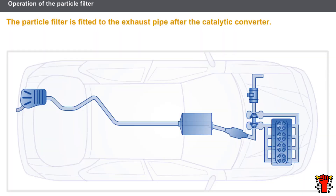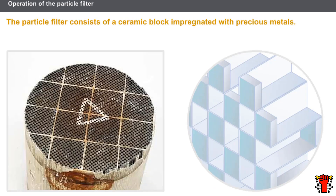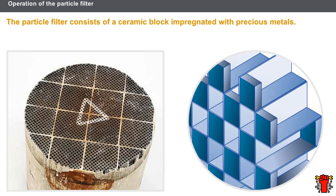The particle filter is fitted to the exhaust pipe after the catalytic converter. The shape of the particle filter is similar to a conventional catalytic converter. The particle filter consists of a ceramic block impregnated with precious metals. The ceramic block is similar to that of a conventional catalytic converter.